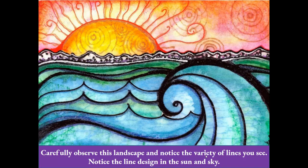Now let's carefully observe this landscape and notice the variety of lines you see. There are a lot of different types — we see scallop lines, curved lines, and wavy lines. Notice the line design in the sun and the sky, and notice how this line design blends into the background. Notice how this artist used different marks and shapes on the mountains to create texture, and notice the curved lines of the sun rays.